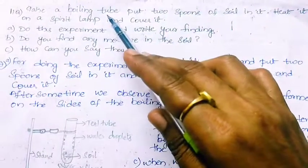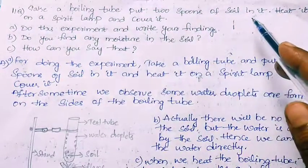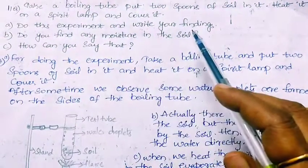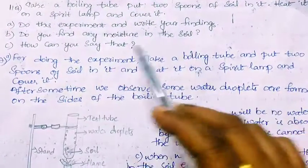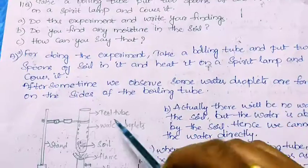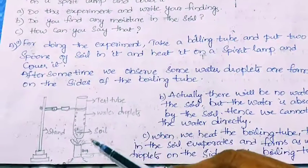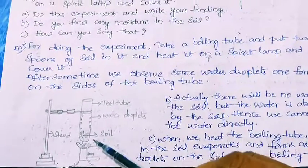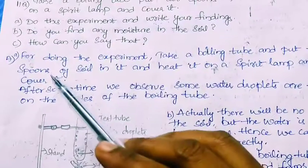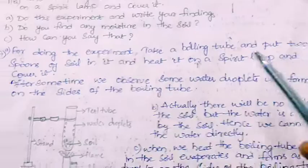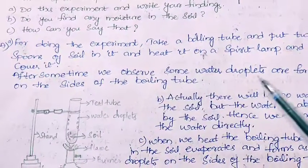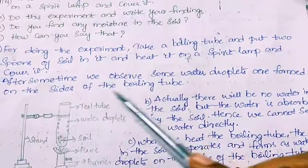Eleventh question: Take a boiling tube, put two spoons of soil in it, heat it on a spirit lamp and cover it. Do this experiment and write your findings. Do you find any moisture in the soil and how can you say that? We will perform the experiment: take a boiling tube, put soil in it, heat it, and small water droplets will be formed on the surface of the boiling tube.